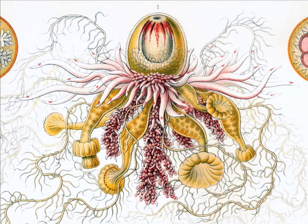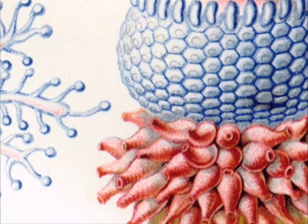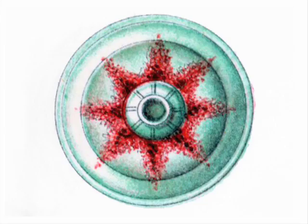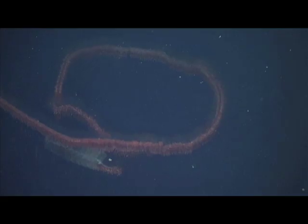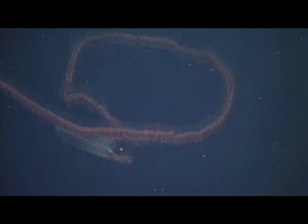In our own bodies, clearly we function as individuals. But when you look at what we're made out of, we're made of a whole bunch of cells, and each of those cells is equivalent to cells that live on their own. So what is the individual in the human even? Is it the cell? Is it the body as a whole? Or is it both? And what does this mean for the way evolution acts on the structure?